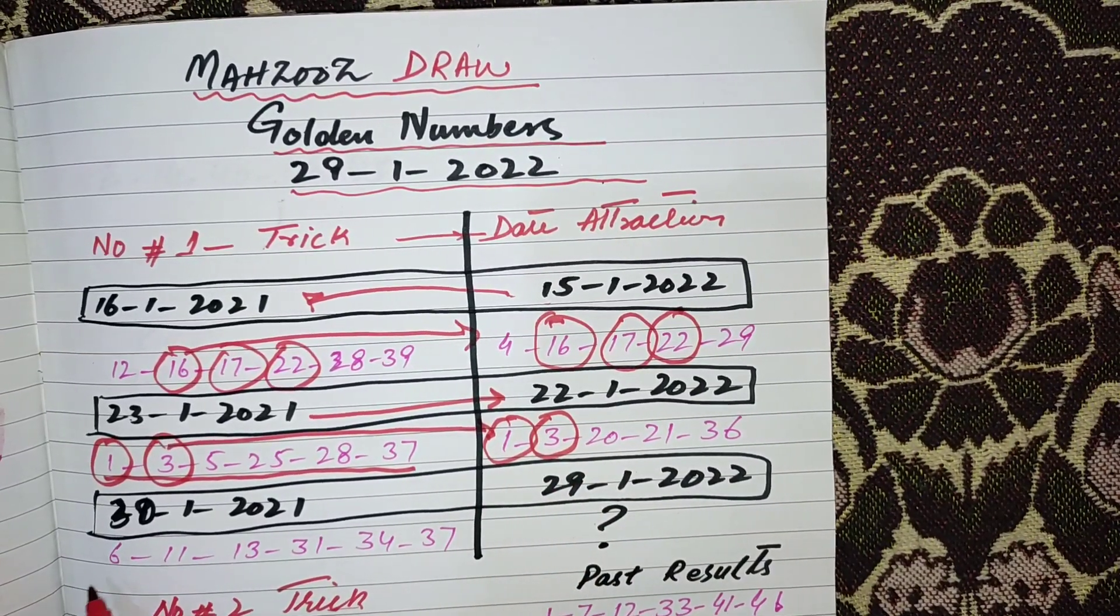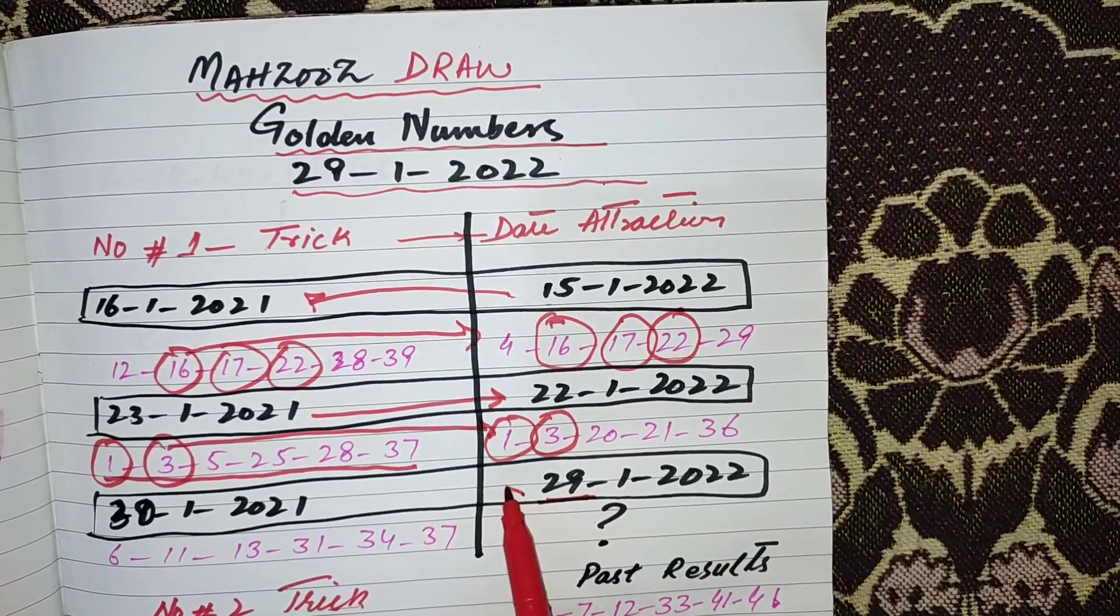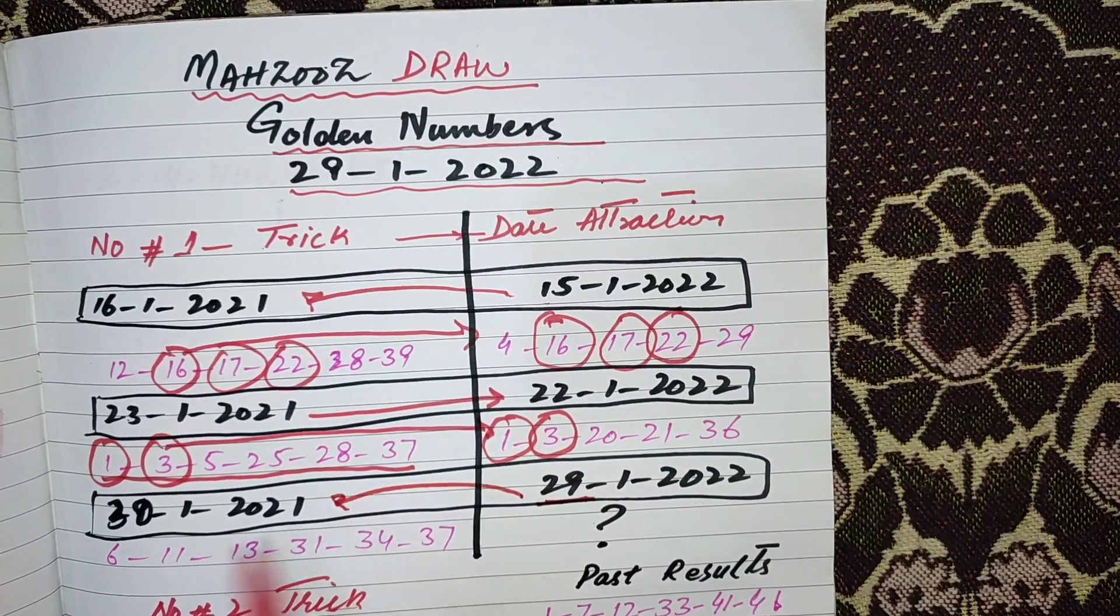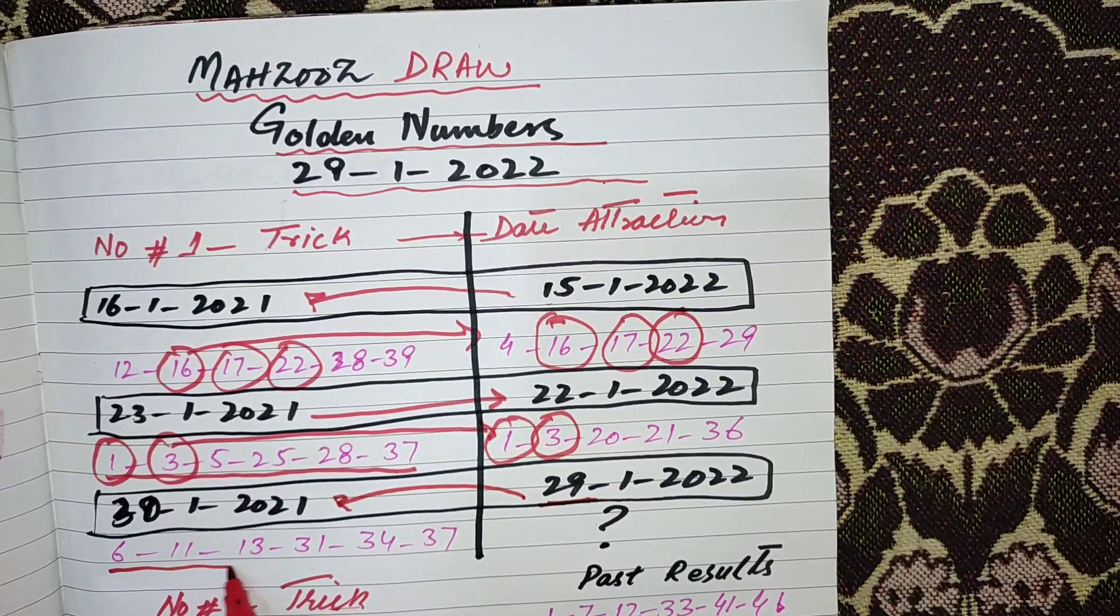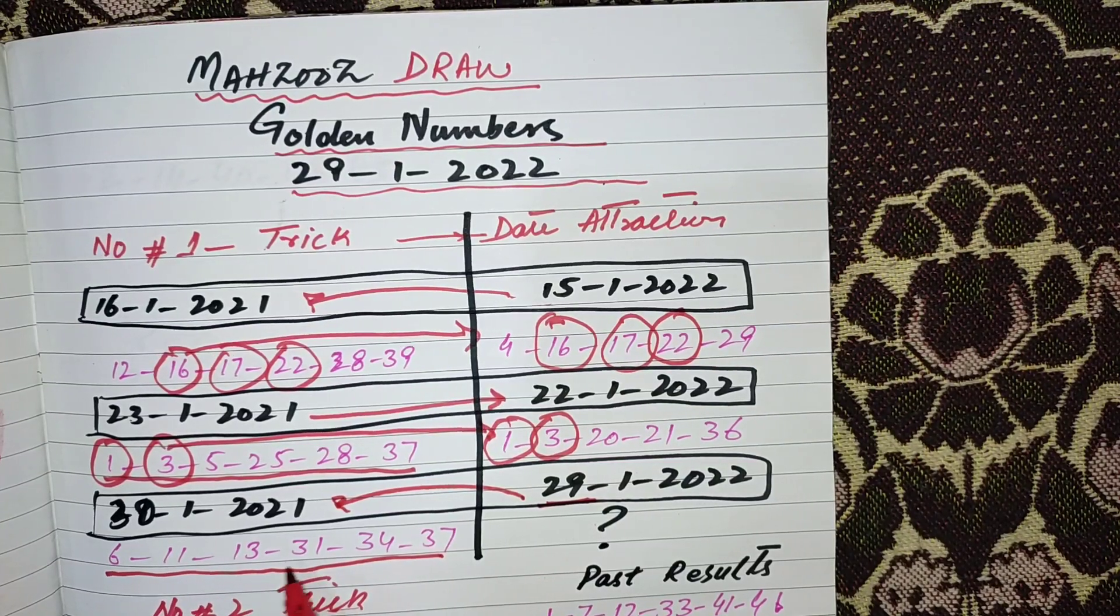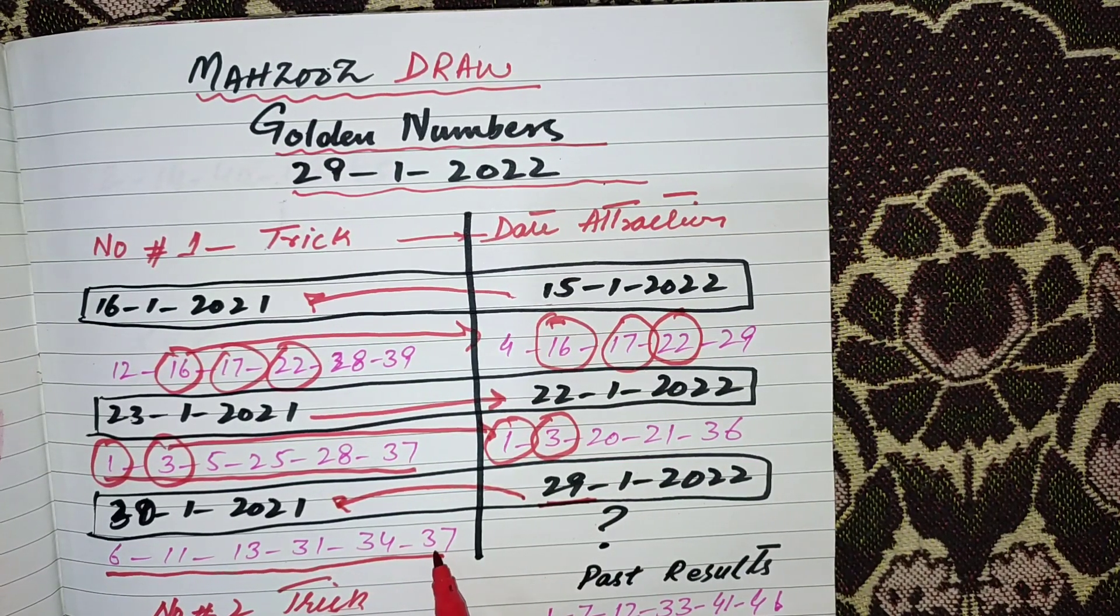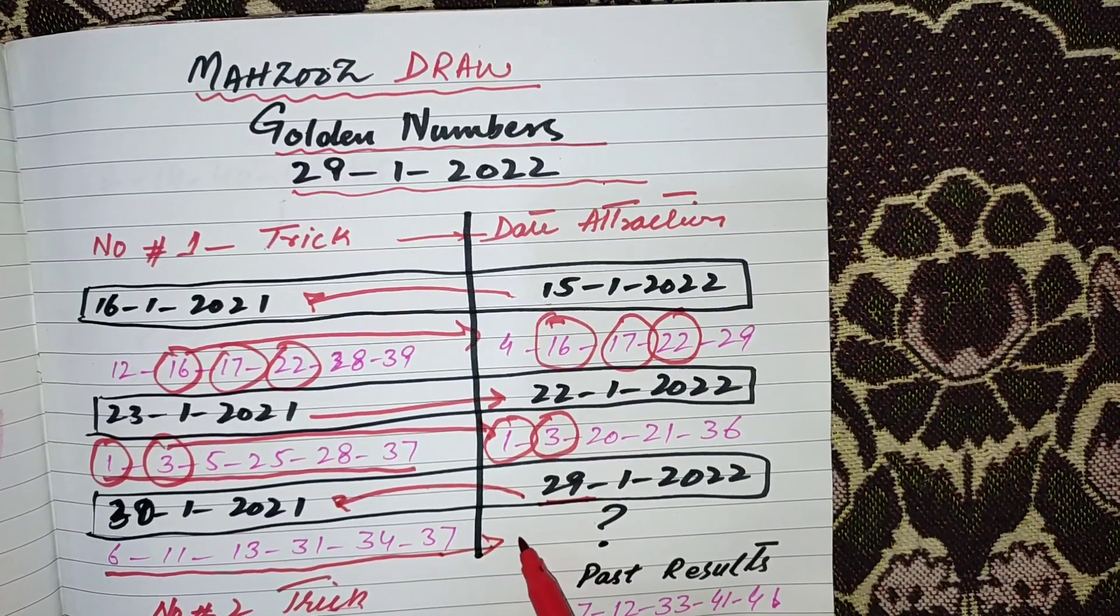Now if this trick will work in extra, which is drawing on 29th, then the same date of previous year is 30th January 2021. And this is the result: 6, 11, 13, 31, 34, and 37. These are powerful numbers.